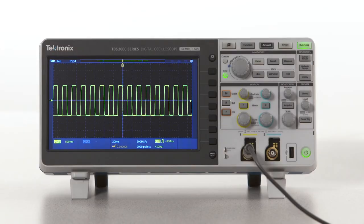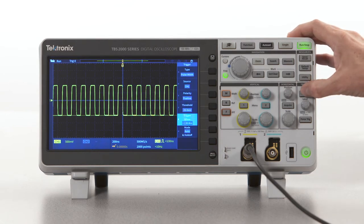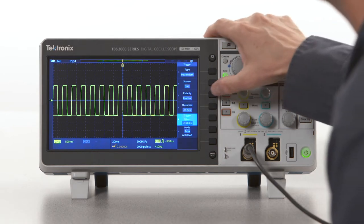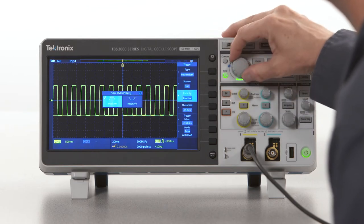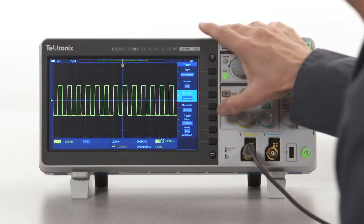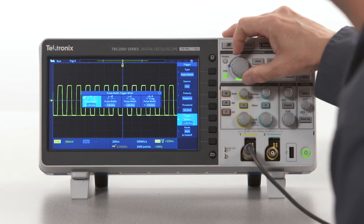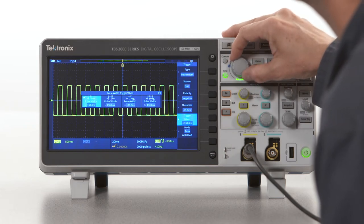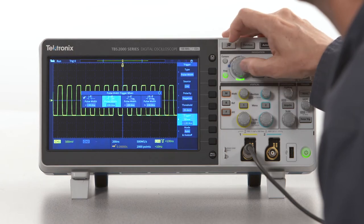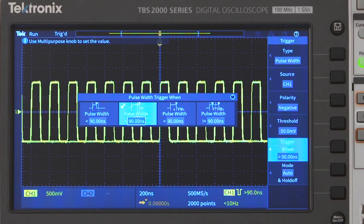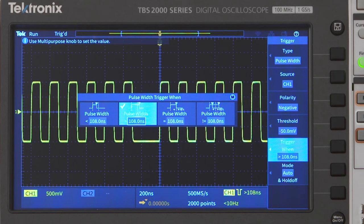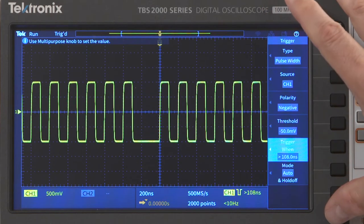Let's say you want to find a missing cycle in a clock signal. In this case, we want to trigger on the lack of a pulse. I'll set the polarity to negative and tell the scope to trigger when the negative pulse is greater than half the clock period. In this case, about 108 nanoseconds. The scope triggers right at the missing pulse.